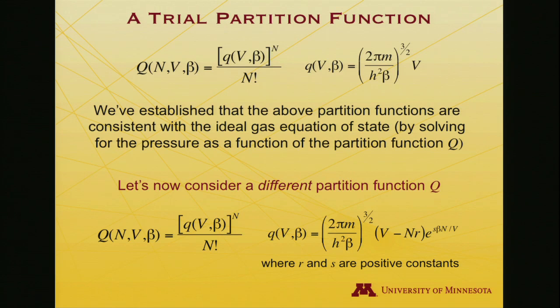But some changes in the individual partition function here. It still contains this 3 halves power, 2 pi mass of the particle divided by Planck's constant squared beta multiplied times volume minus number of particles times some constant, positive constant r, multiplied times the exponential of s times beta times number of particles divided by volume. So these extra terms then cause this molecular partition function to be different from this one.